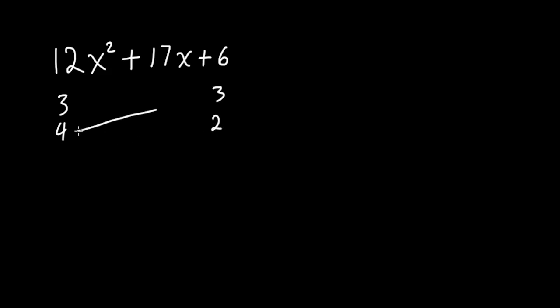Then you cross multiply. 4 times 3 is 12, and 3 times 2 is 6. When you add these together, do they add up to the middle term? No, this is 17 and this is 18. So these aren't the factors. We'll try again.